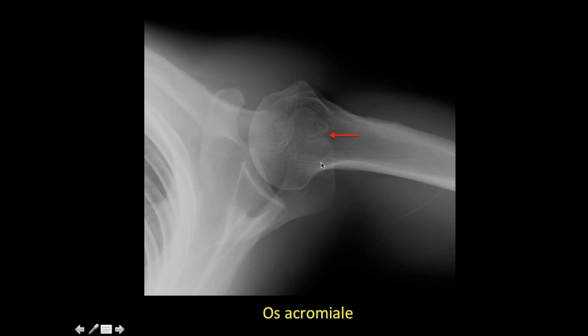In this patient you can see a well-corticated body with a radiolucency — this is not an acromion fracture but an os acromiale. Be careful before reporting an os acromiale as an acromion fracture in younger individuals less than 23 to 24 years old, as an os acromiale may be present.